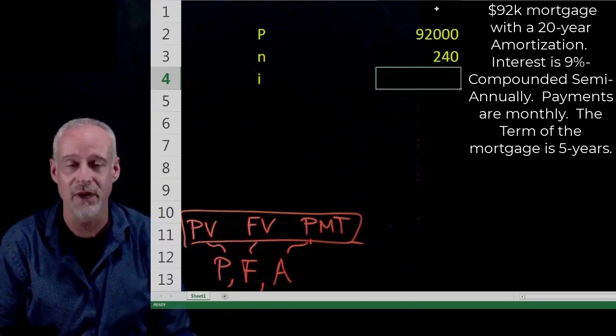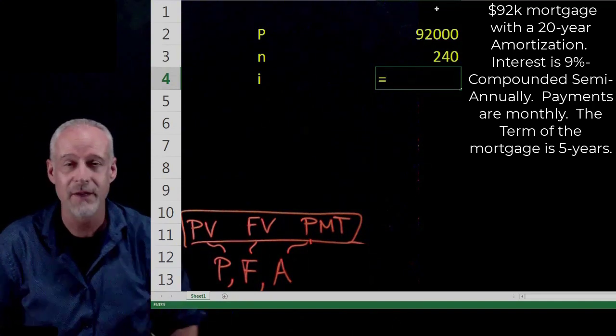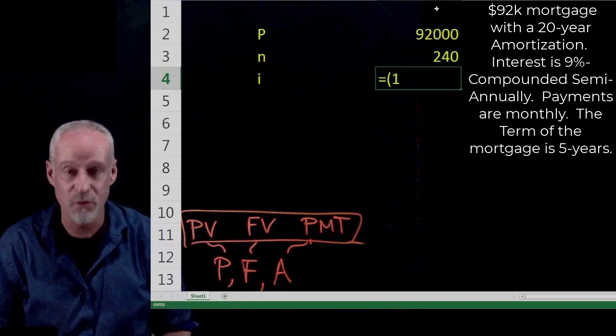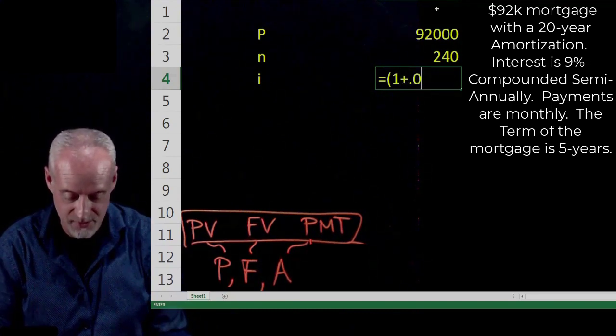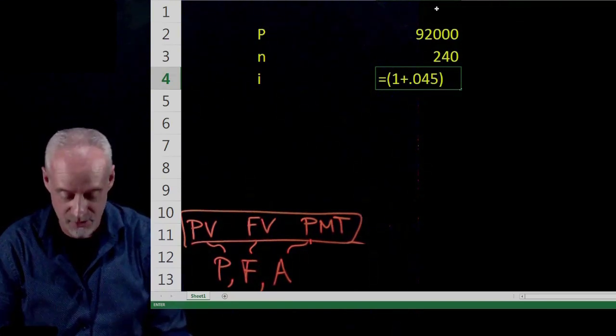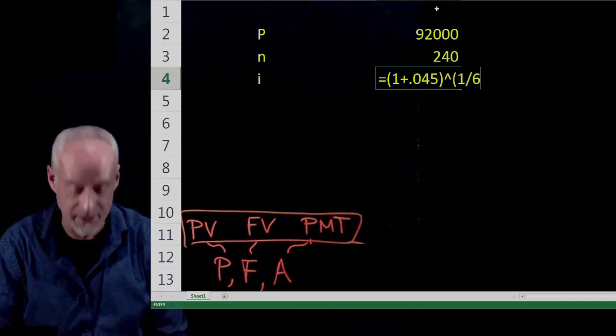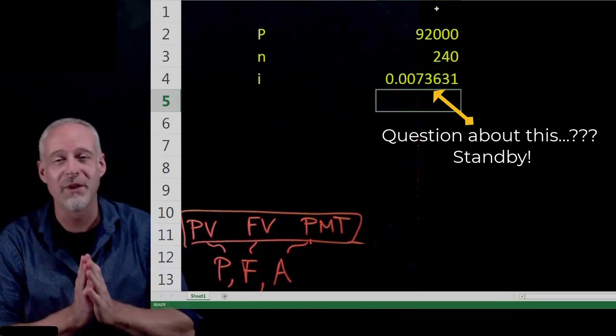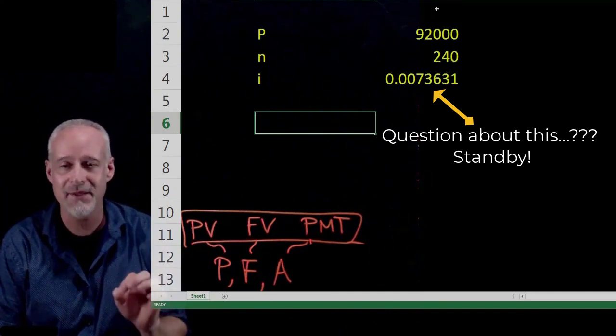Now let's take an interest rate, and maybe what I'll do inside this cell is I'll actually calculate the value of I the way I should have, which would be 1 plus 0.045, that was our 9% divided by 2, and then I'll do to the power of 1 sixth minus 1, 0.0073631.